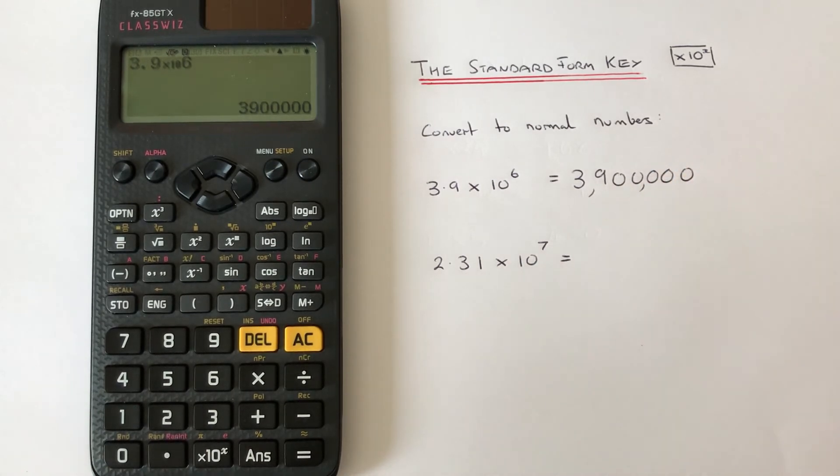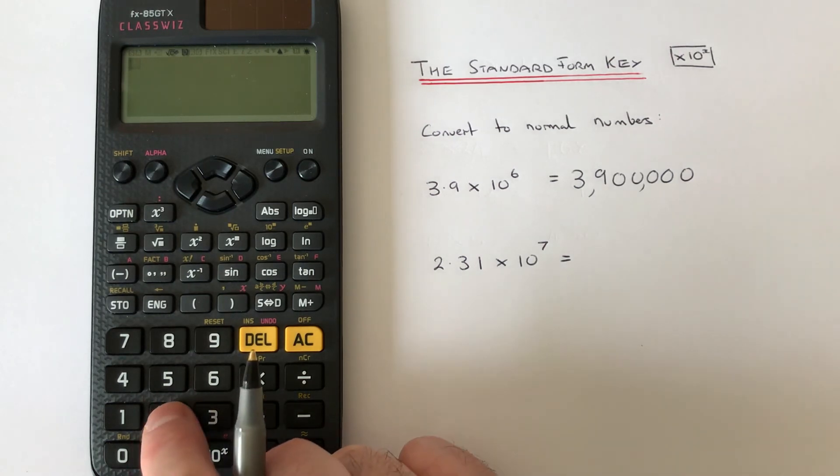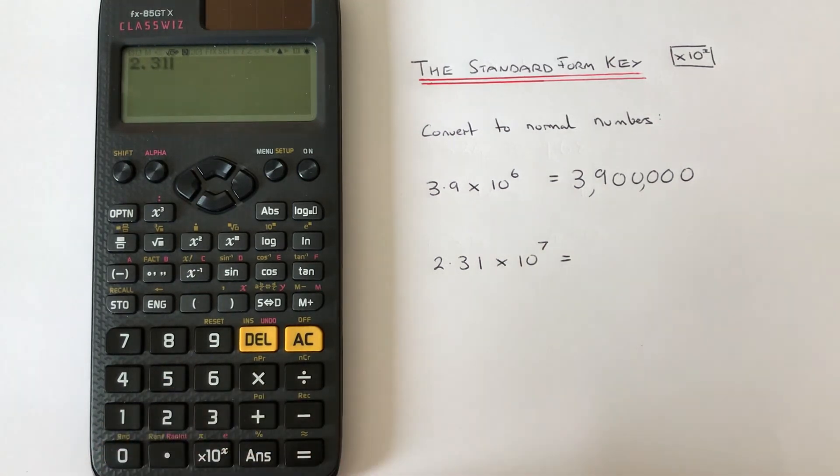We get an answer of 3 million 900 thousand. Let's have a look at the second example. This one we've got 2.31 times 10 to the power of 7. So we go 2.31 times 10, and then just press 7.